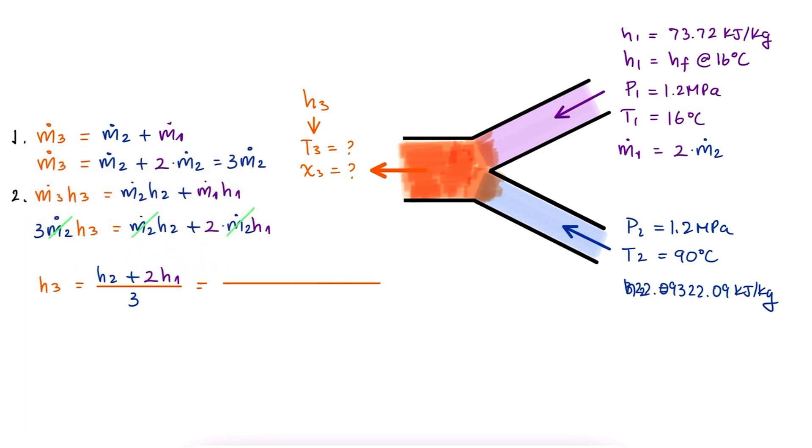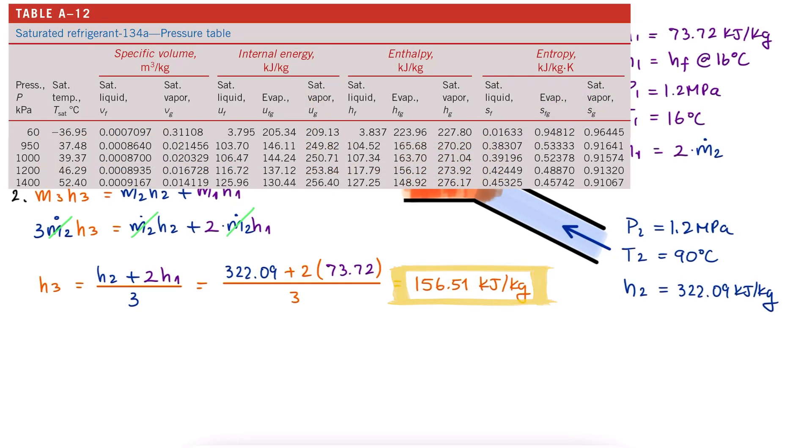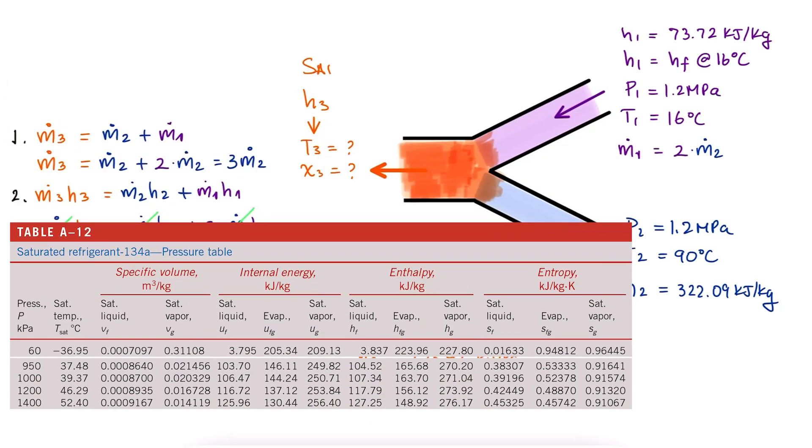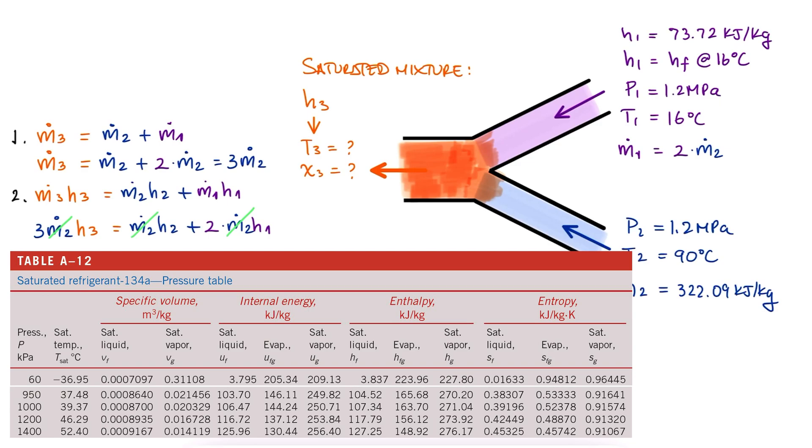We substitute these two values in our H3 expression and find the specific enthalpy at the exit. With this value and a pressure of 1.2 MPa at the exit, we see that HF is lower than that and HG is higher than that. This means that the refrigerant is in fact in a saturated mixture state and that the temperature is the saturation temperature at 46.29 degrees Celsius.